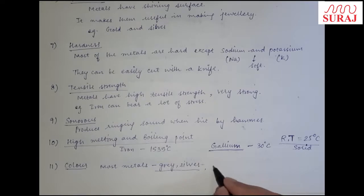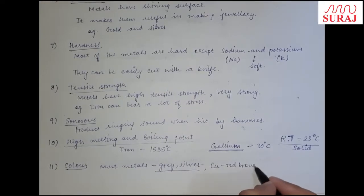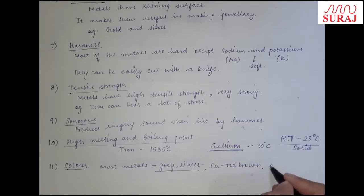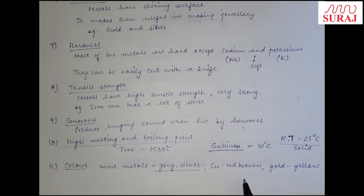कुछ metals का अलग color होता है — जैसे copper (symbol: Cu) red-brown color का होता है, जैसे घर में copper की utensils होती हैं। और gold yellow color का होता है। So copper is red-brown and gold is yellow.